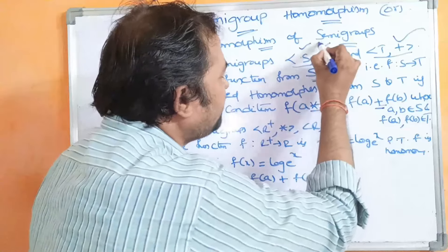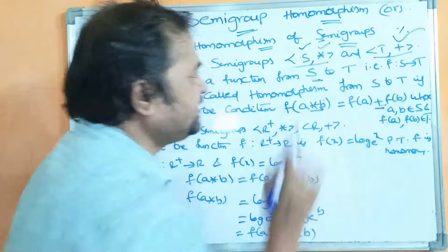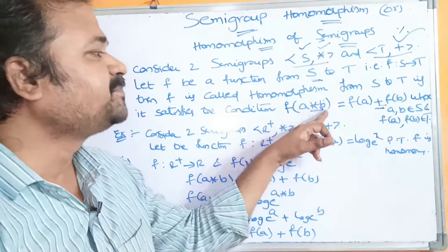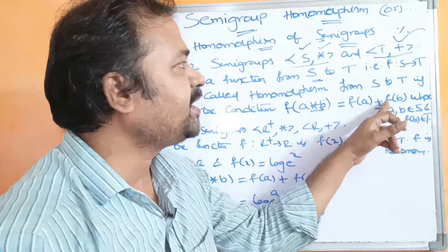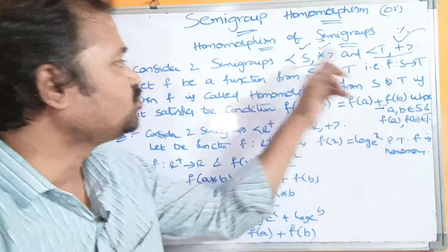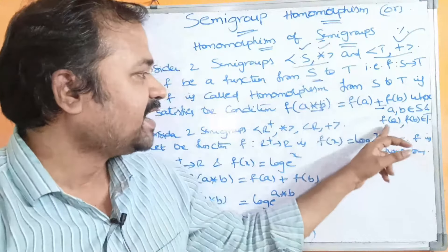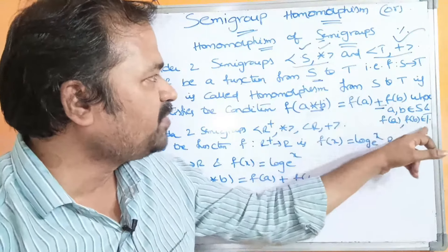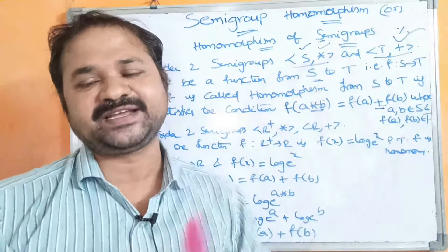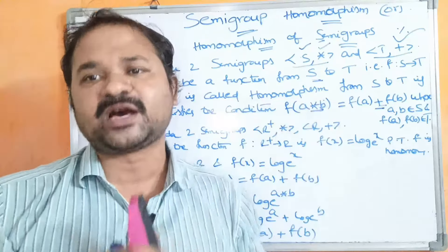For example, if in place of ★ we have minus and in place of + we have modulo, then the condition becomes F(a − b) = F(a) % F(b), where a and b belong to S (semigroup one set) and F(a) and F(b) belong to T (semigroup two set). This is the definition of semigroup homomorphism.